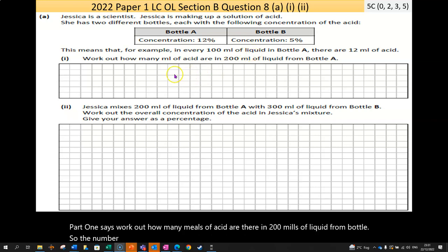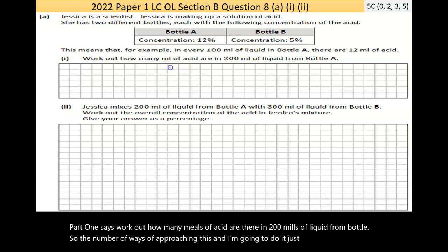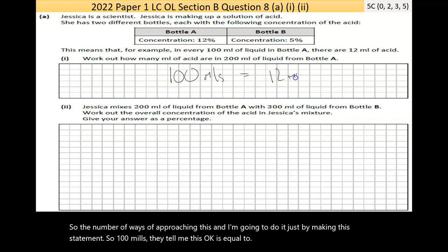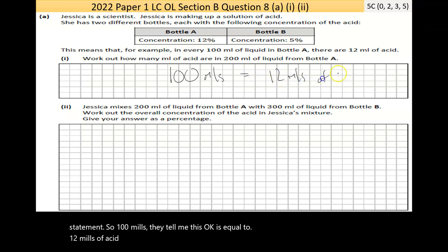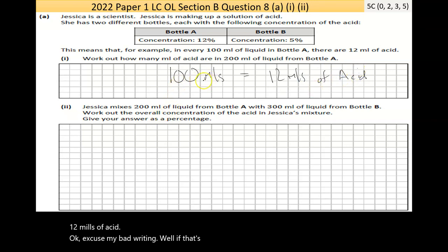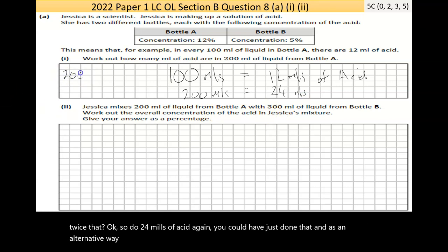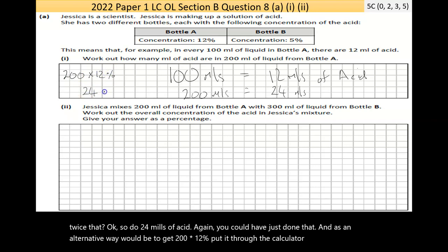There are a number of ways to approach this. They tell us 100ml contains 12ml of acid, so 200ml is just twice that — 24ml of acid. Alternatively, you could calculate 200 × 12% on the calculator and you'd also get 24ml.